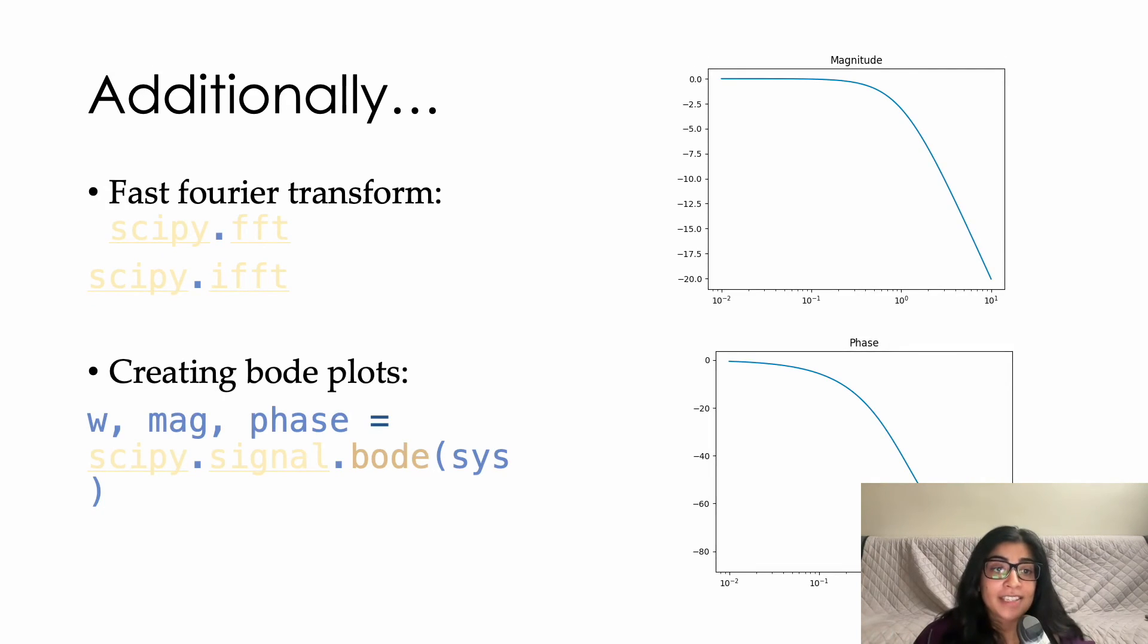We can also do Bode plots. And this is really fantastic if you're playing around with the transfer function itself. I've plotted a really basic one here. But you can examine both the magnitude and the phase using like a one line to pull out the magnitude phase components. And this is just so fast, so intuitive, and very similar to how you do it in MATLAB.